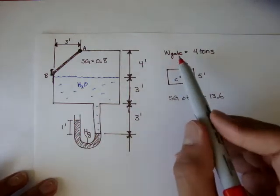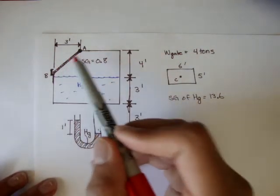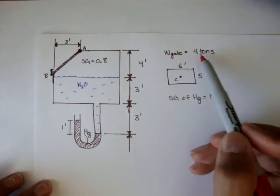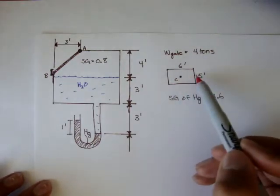The problem gives us that the weight of this gate is 4 tons, so 4,000 pounds, and the cross-sectional area, or not the cross-sectional area, but the front-facing.